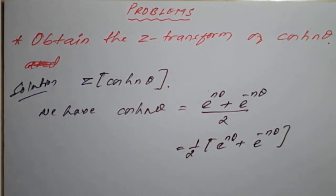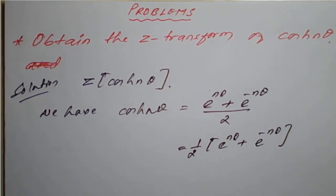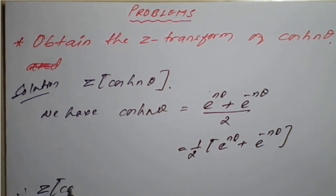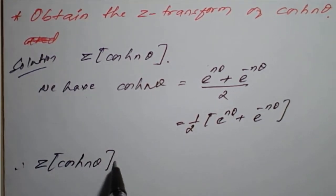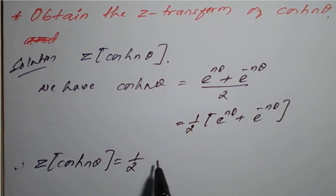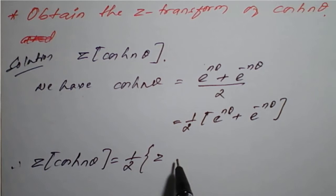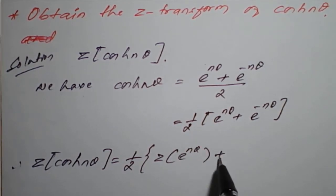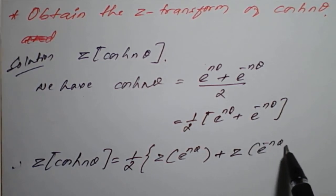Taking the Z-transform on both sides, we get: Z-transform of cosh(nθ) equals 1/2 times the quantity [Z-transform of e^(nθ) plus Z-transform of e^(−nθ)].